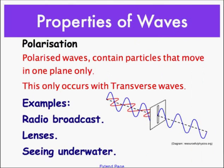Something else that's a property of a wave that we didn't look at last year is called polarization. Polarized waves contain particles that move in one plane only. This only occurs with transverse waves. Examples of this are the radio broadcast, lenses, and seeing underwater. Those things are where you can see polarization in effect. A radio broadcast, usually you put your aerial vertical, or you look at a TV aerial, the old TV aerials. They're usually those big things like that. They're polarized because your waves come in sideways and hit your aerial in the same plane of motion.